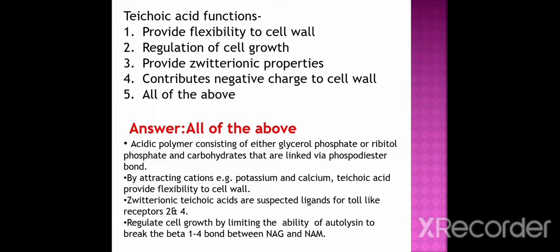Teichoic acids are acidic polymers consisting of either glycerol phosphate or ribitol phosphate and carbohydrates that are linked via phosphodiester bonds. They provide flexibility to the cell wall by attracting cations such as calcium and potassium. The deuteronic teichoic acids are suspected ligands for toll-like receptors 2 and 4. Teichoic acid regulates cell growth by limiting the ability of autolysin to break the beta-1,4 bond between N-acetyl glucosamine (NAG) and N-acetyl muramic acid (NAM).